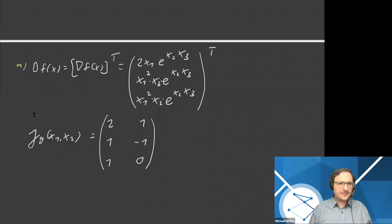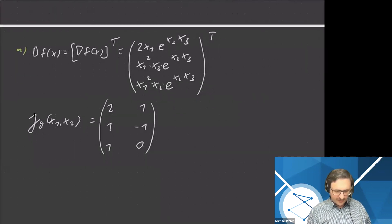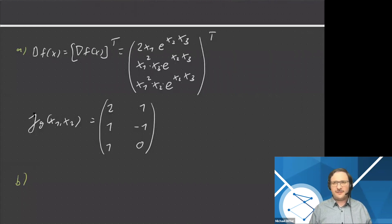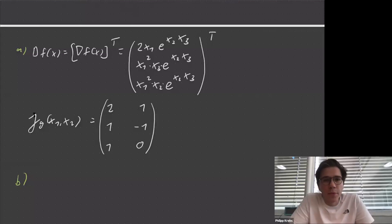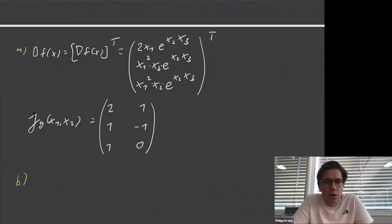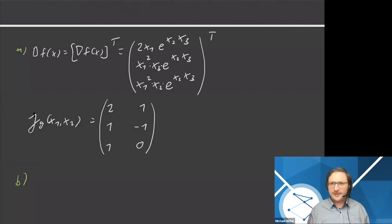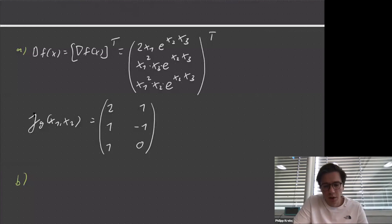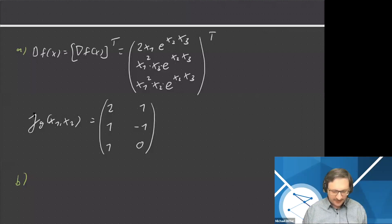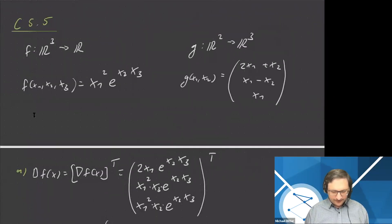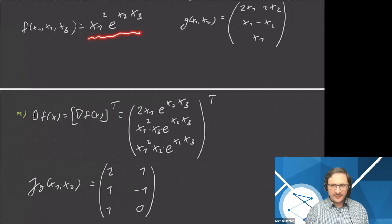In part b we apply the chain rule to get the derivative of the composed function f∘g. Before we do that, a question came in asking to reiterate the values of part 5.5a. Let me explain once more. Here is f, and we have to differentiate with respect to x₁, x₂, and x₃ to get the gradient.